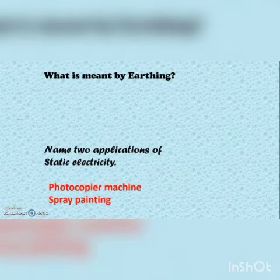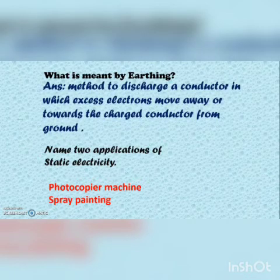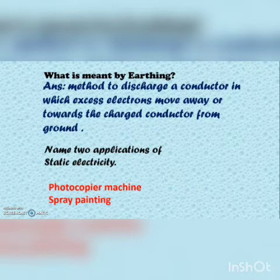Next question: What is meant by earthing? Answer: It is the method to discharge a conductor in which excessive electrons move away outward from the charged conductor to the ground.